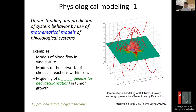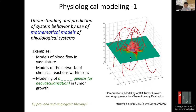Another example is modeling of angiogenesis, or neovascularization, in tumor growth. 'Angio' means blood and 'genesis' means new formation. As cancer tumors grow they require oxygen and nutrient supply, so they secrete factors that grow blood vessels from existing vessels — this new vascular growth is called angiogenesis.